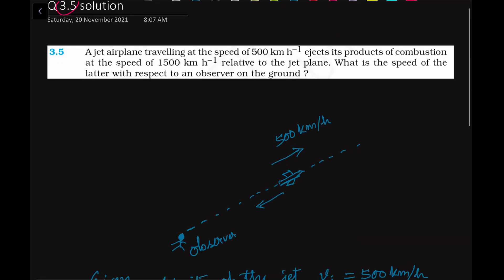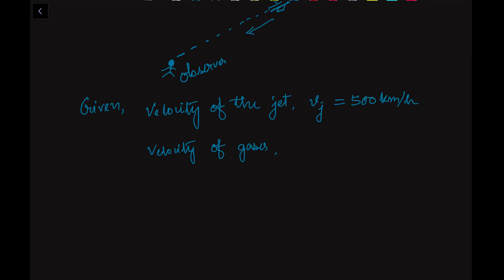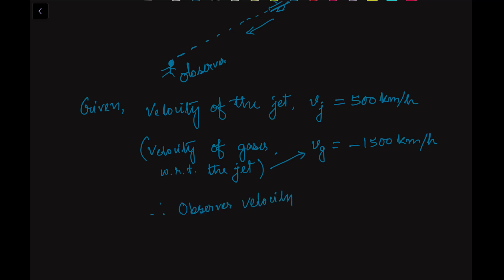Velocity of the products of combustion — we call them gases — so velocity of the gases, Vg, relative to the jet is equal to minus 1500 km per hour, since they are moving in the opposite direction. Now we assume that the observer is at rest, therefore observer velocity V_o is equal to 0 km per hour.